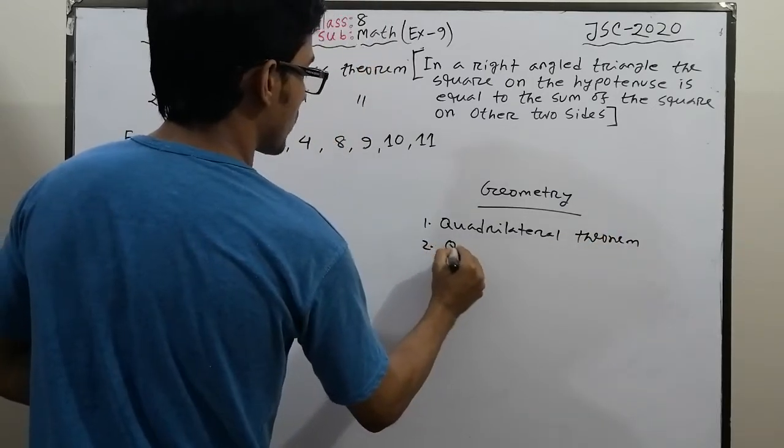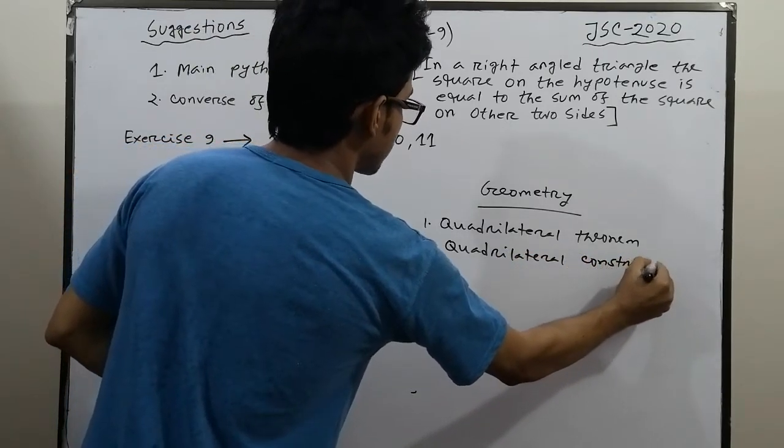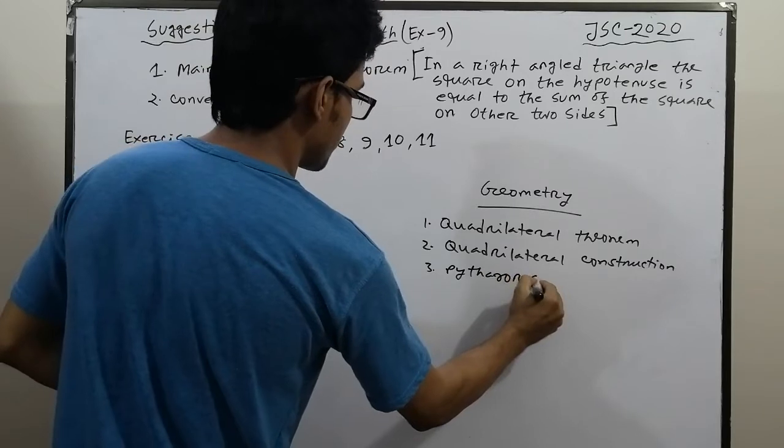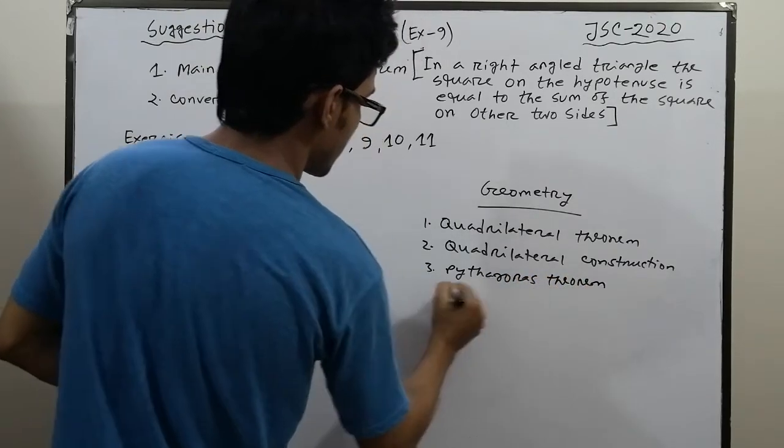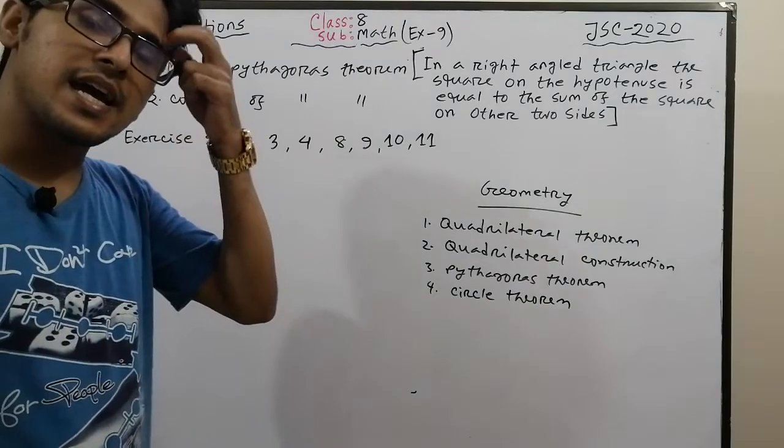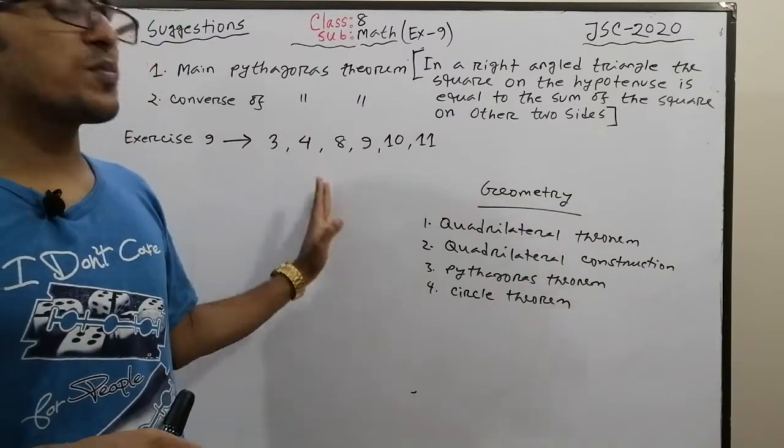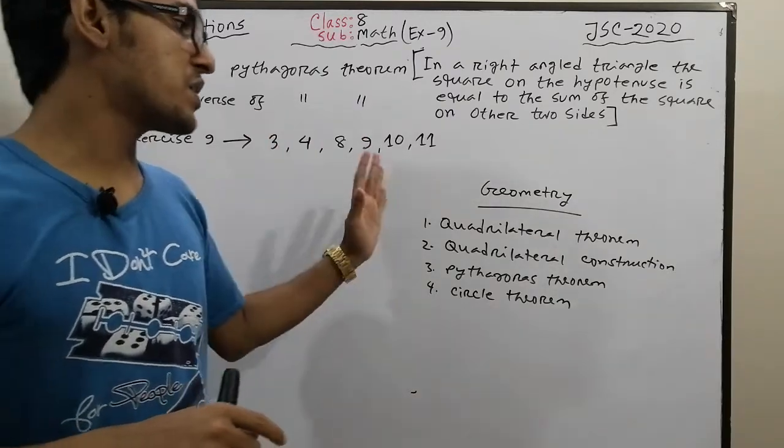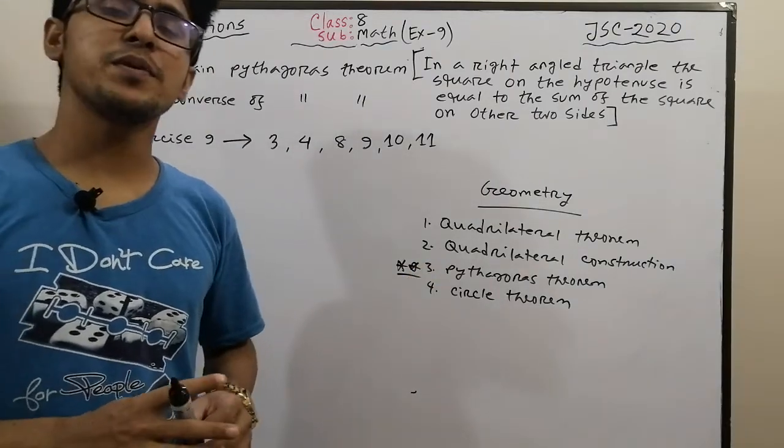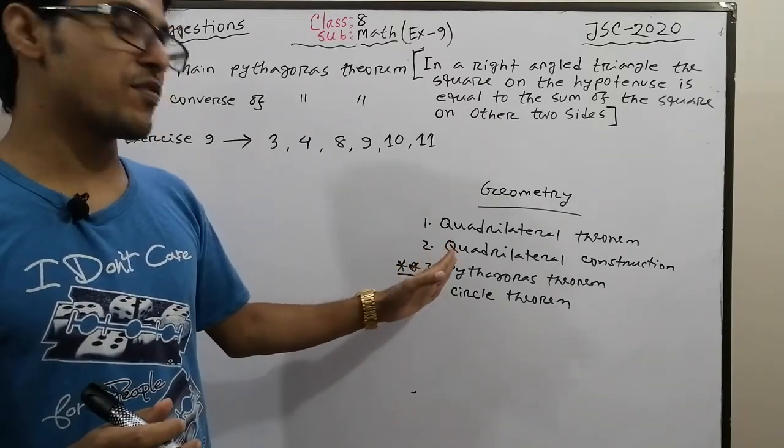The chapter includes quadrilateral construction, quadrilateral theorem, and some Pythagorean theorem. It also includes circle theorem. Different question types will appear. In the board exam, the HSC 2020 exam had important topics including theorems.